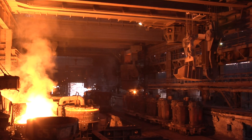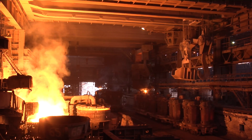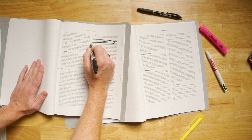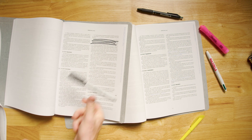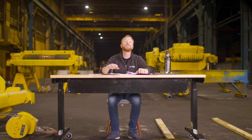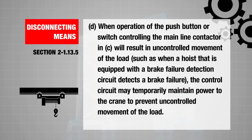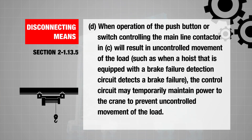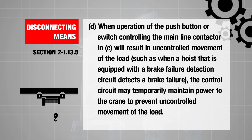The provision for controllers stating that automatic cranes shall be so designed that operation of all motions shall be discontinued if the automatic sequence control becomes ineffective has been removed from the 2022 edition of ASME B32. A condition was added to the section on disconnecting means stating: when operation of the push button or switch controlling the main line contactor will result in uncontrolled movement of the load — such as when a hoist equipped with a brake failure detection circuit detects a brake failure — the control circuit may temporarily maintain power to the crane to prevent uncontrolled movement of the load.